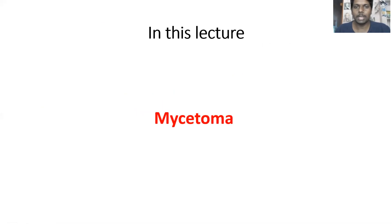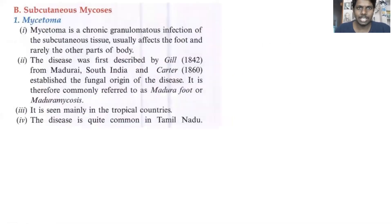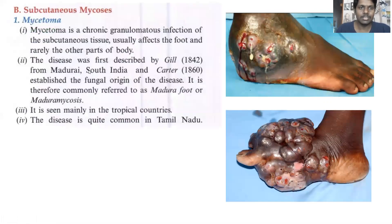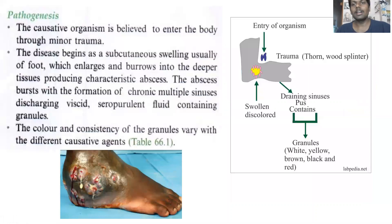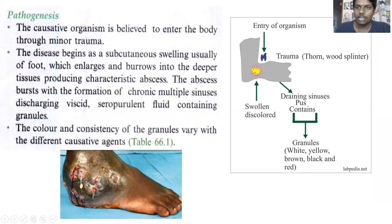A quick revision: Mycetoma is a chronic granulomatous infection confined to the subcutaneous layer of the foot. It was first discovered by Gill in 1842 in Madurai, South India, and Carter established the origin in 1860. It is usually seen in tropical countries and is very common in Tamil Nadu. The pathogenesis: the fungus gains entry into the skin, the skin starts swelling, it starts producing multiple sinuses, and from the sinuses it discharges seropurulent fluid.